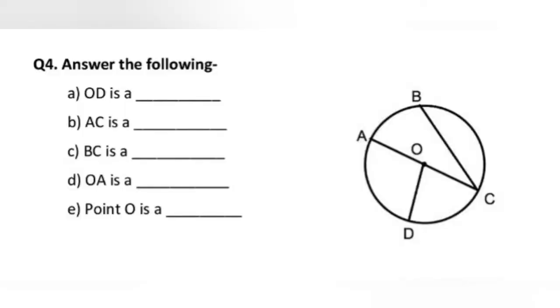Now, last question is question number 4. Answer the following. You have the circle and some parts related to it. So, first part is, OD is a dash. Now, look at the OD. O to D. That means center to circumference. This distance is the radius of a circle. Right? So, here, you will write radius. OD is a radius.